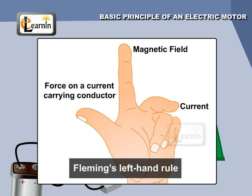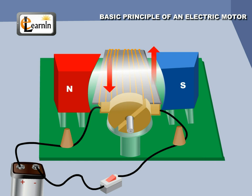Alternatively, a current carrying coil is subjected to a magnetic force according to Fleming's left hand rule. The force rotates the coil, imparting it with kinetic energy.